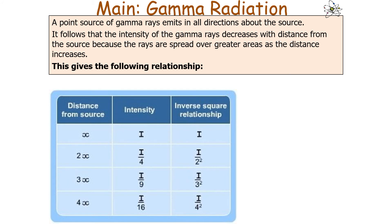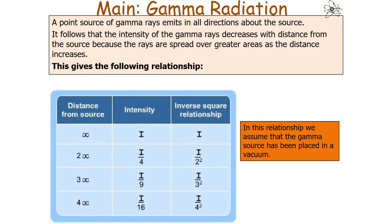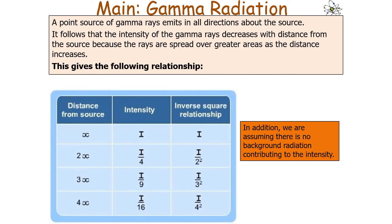A point source of gamma rays emitted in all directions will follow the inverse square law because the intensity of gamma rays decreases with distance as the rays are spread over a greater area. In this relationship we assume the gamma source is placed in a vacuum so it isn't being ionised by the air, that the gamma source is isotropic — the same in all directions — and that there is no background radiation contributing to the intensity value.